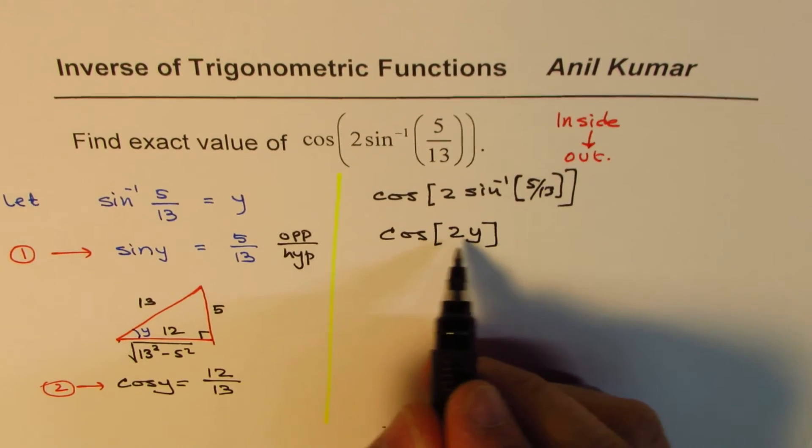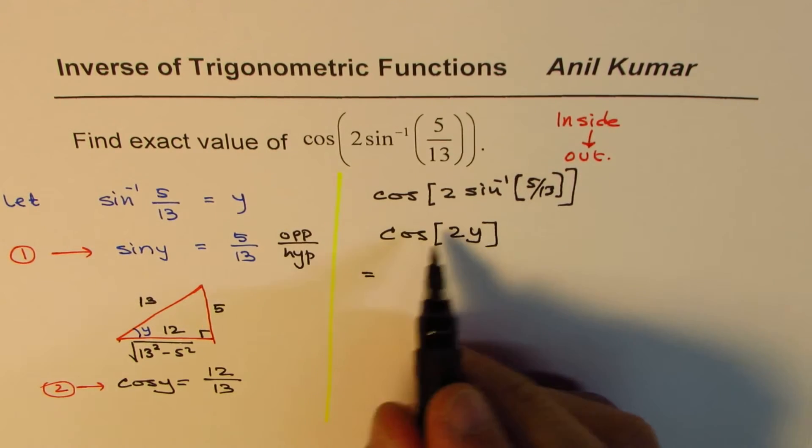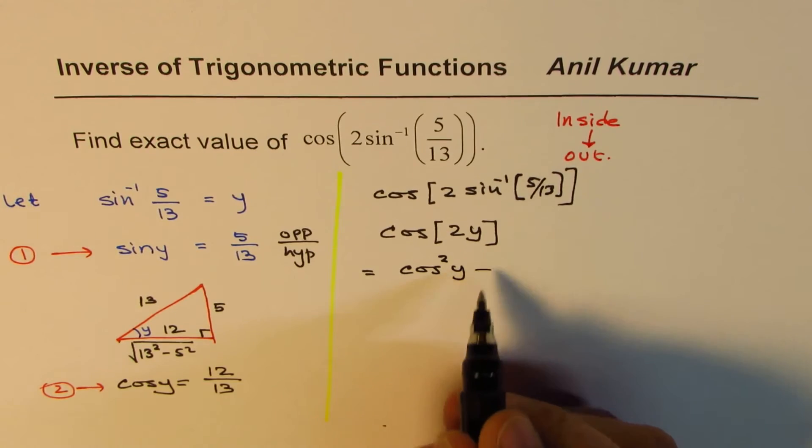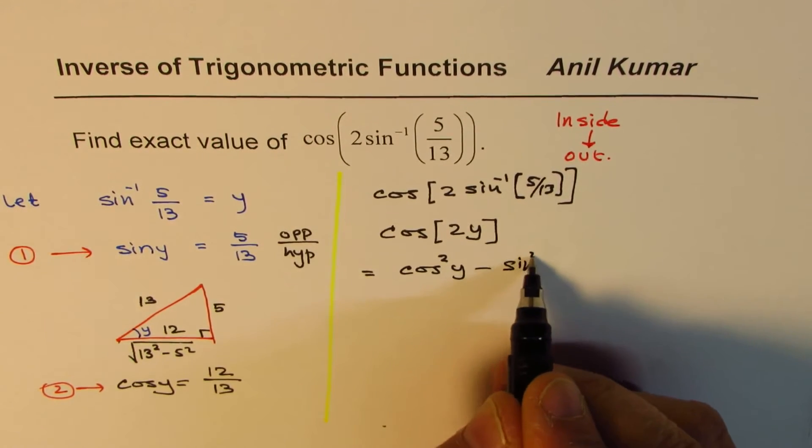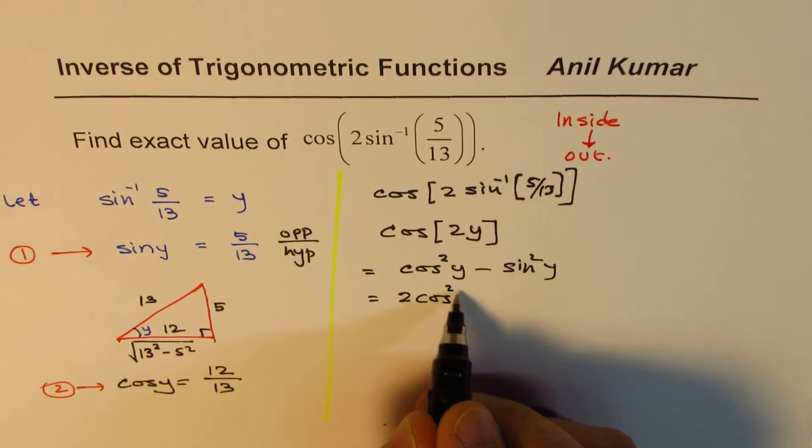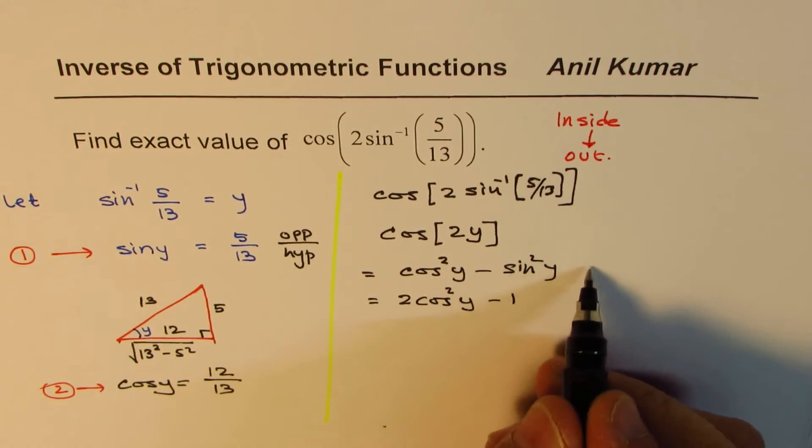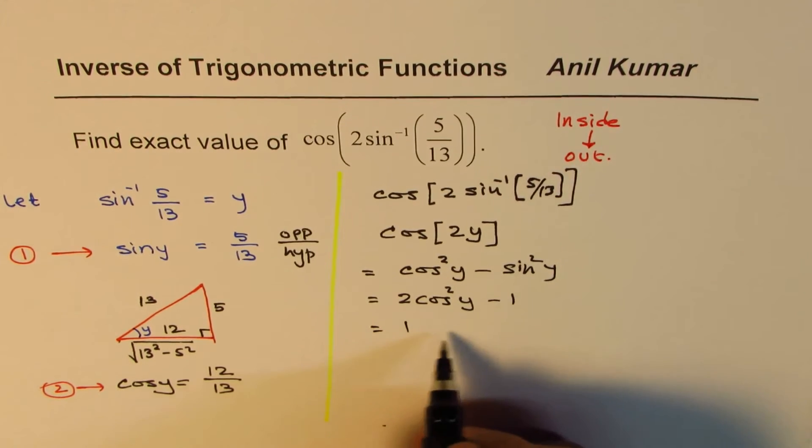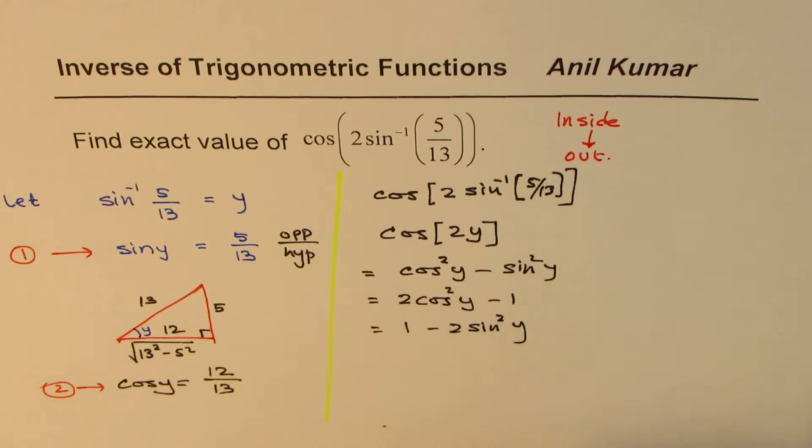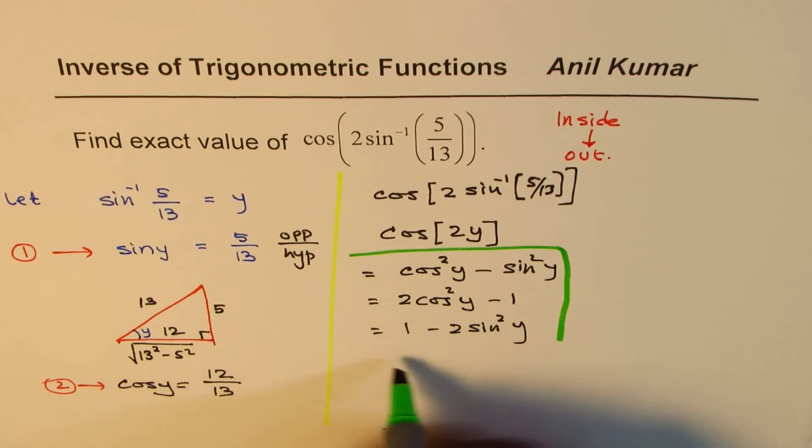Now what is cos(2y) equal to? Well, you have learned three combinations. One of them is cos²(y) - sin²(y). You also learned this is equal to 2cos²(y) - 1, if I put sin²(y) is 1 - cos²(y), or 1 - 2sin²(y). So you learned all this. So I'm just putting them in bracket, not utilizing now.